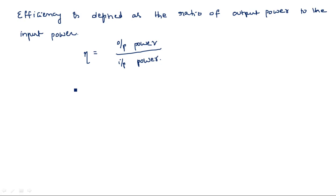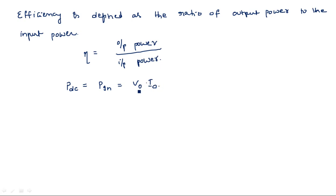The DC power P_dc is the input power, because we are not giving any AC input voltage to this oscillator — we are giving only DC input power. There are two types of DC voltages: the accelerating voltage and the repeller voltage. The repeller voltage is not considered here; we use the accelerating voltage because the electron velocity depends completely on it. So P_input = V0 × I0, where V0 is the accelerating (anode) voltage.